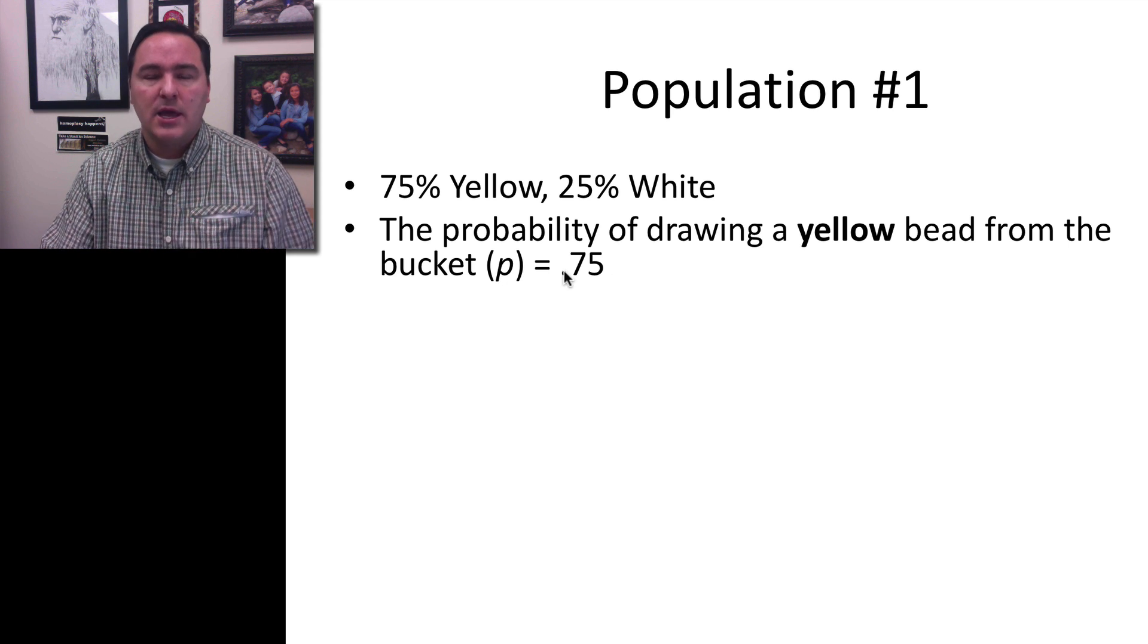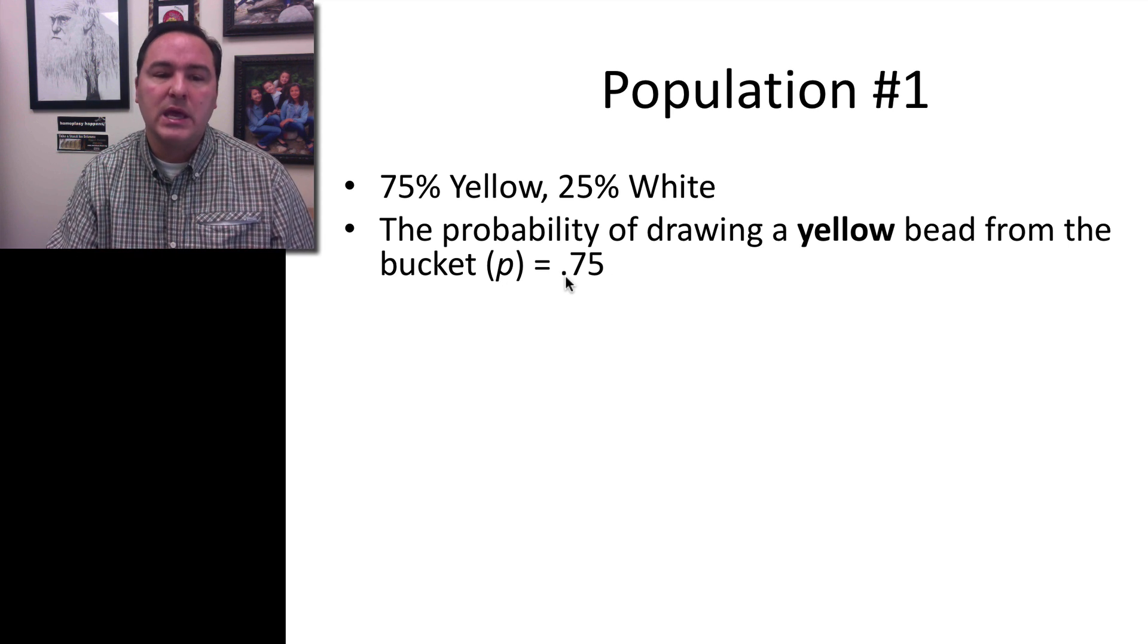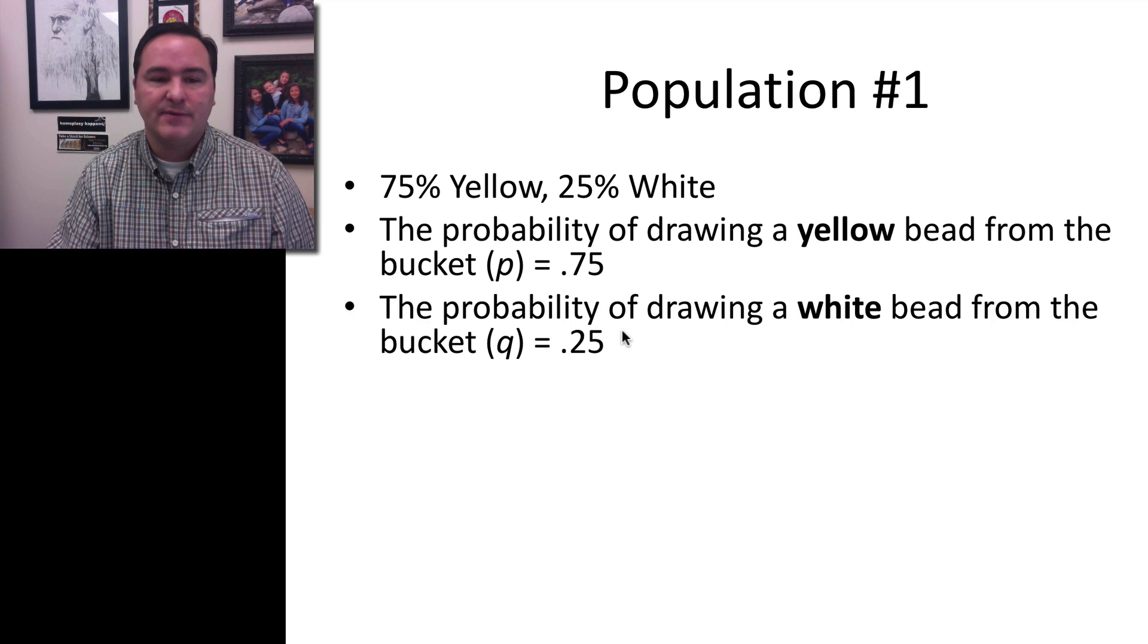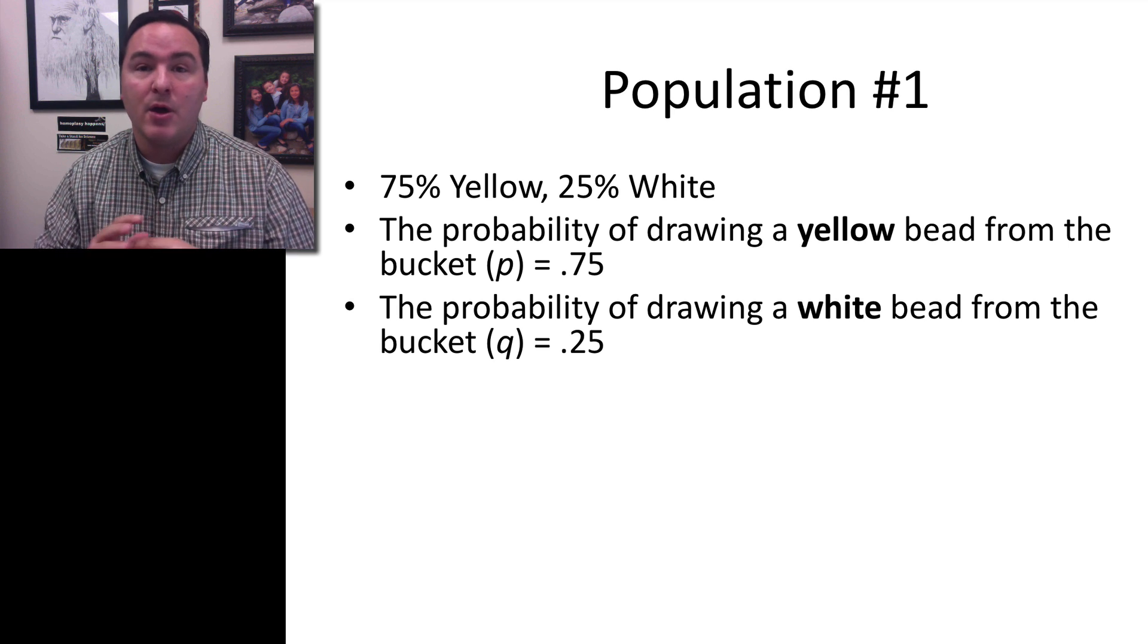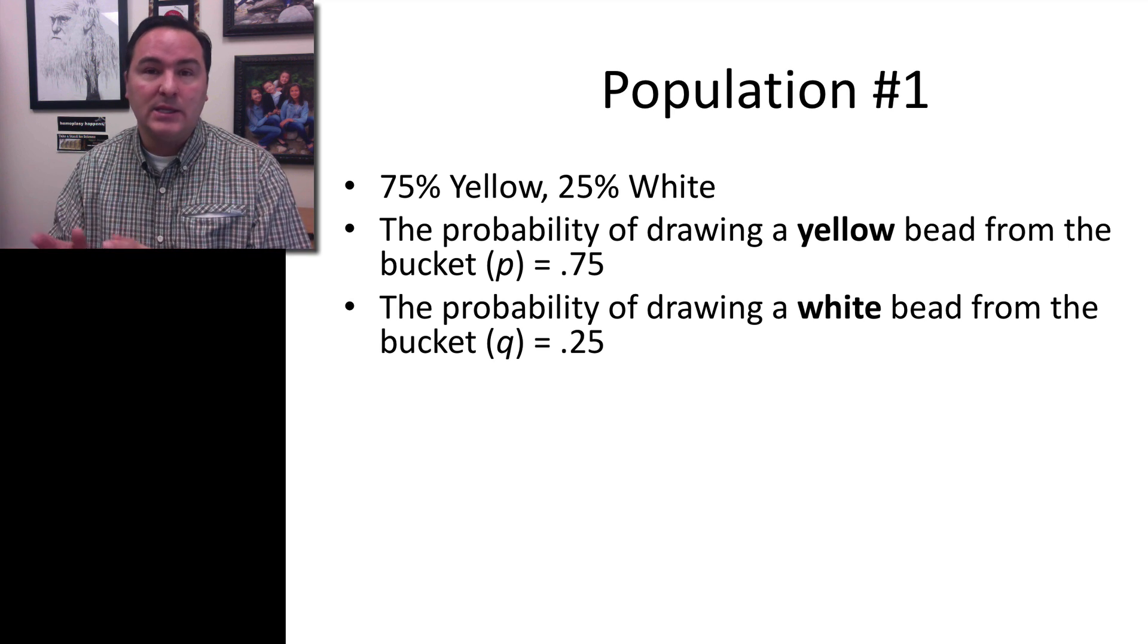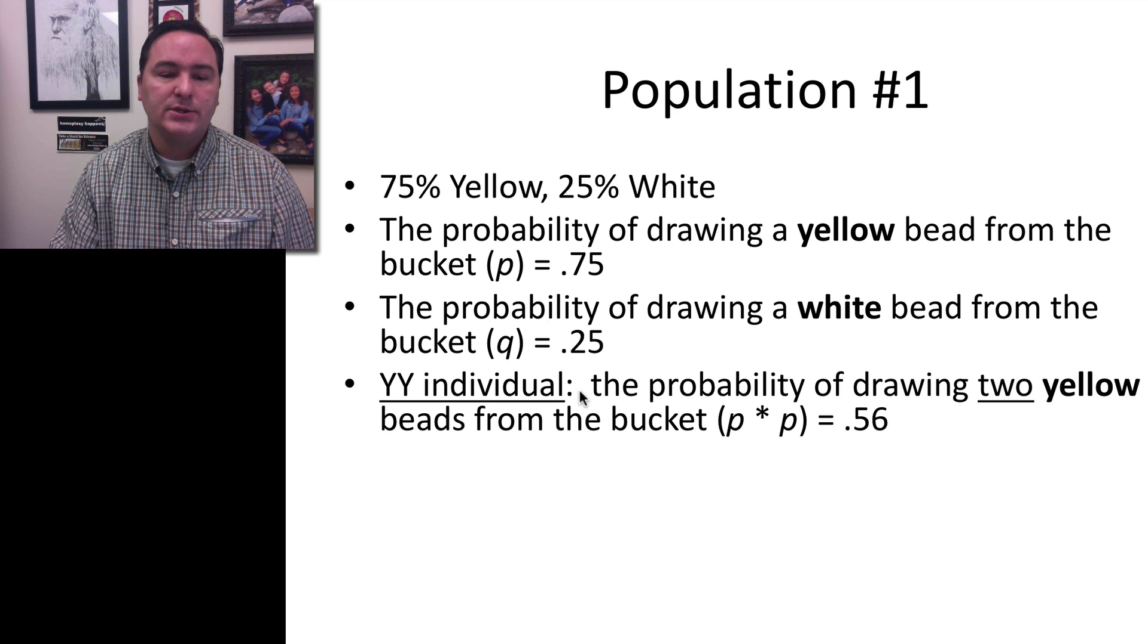So the allele frequency in that population is P, or 0.75, 75%. By the same token, the probability of drawing out a white bead, or the probability of producing a little y gamete from that population is 0.25.